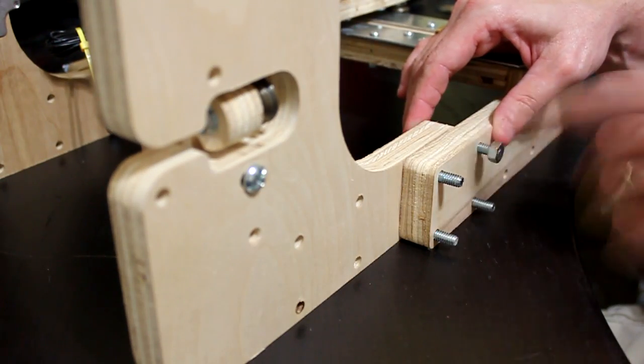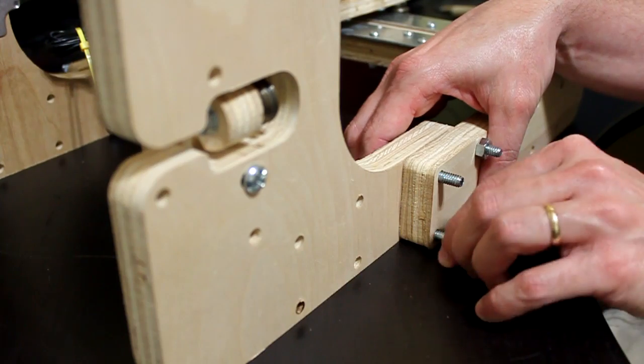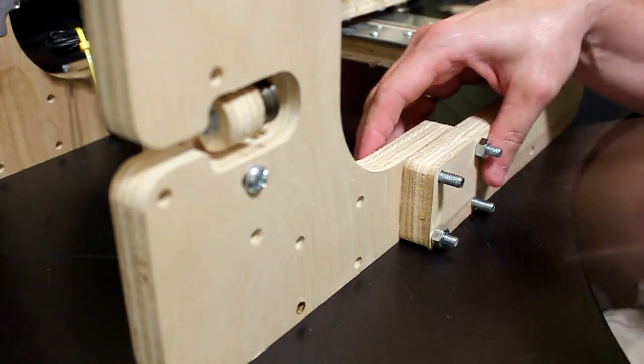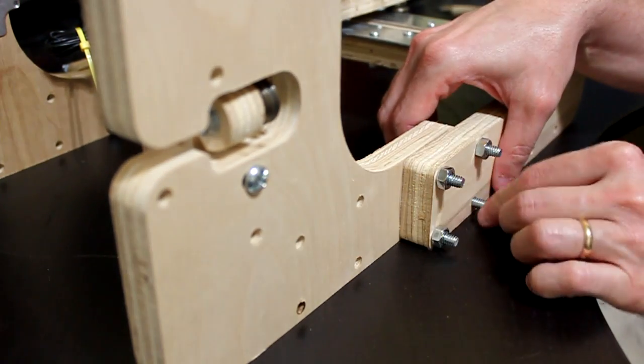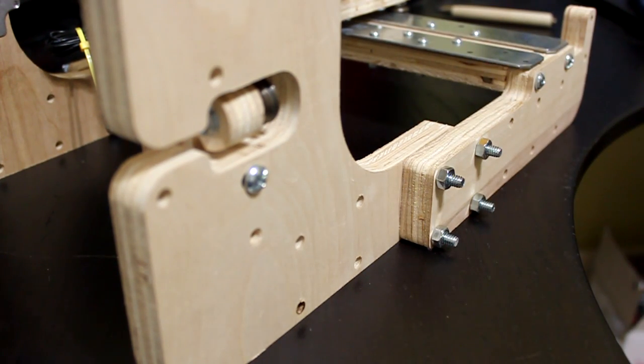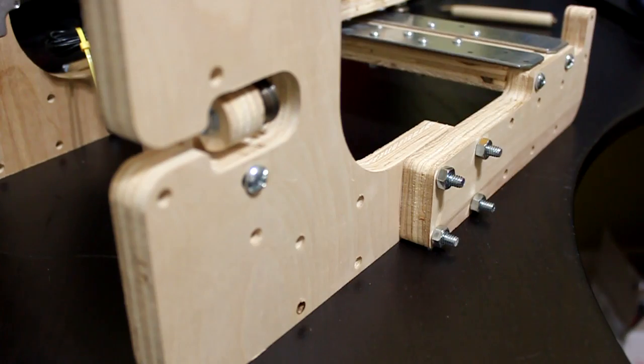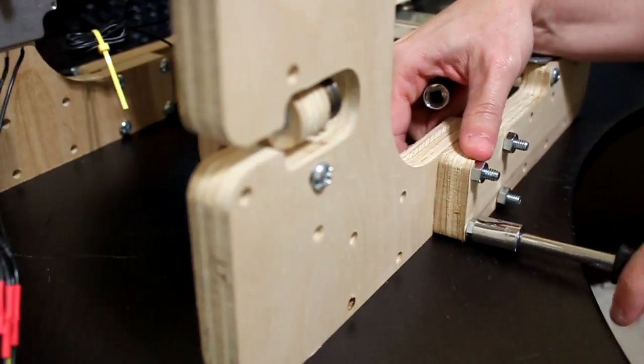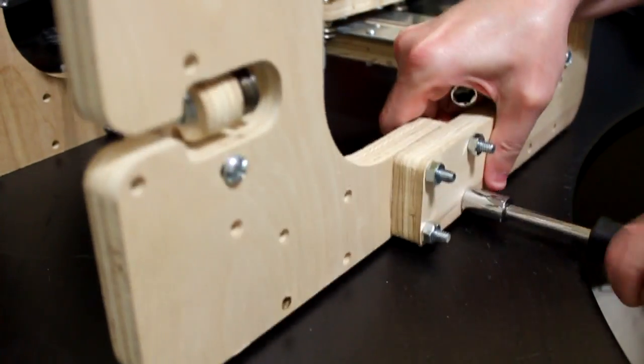It is suggested that you use the other holes for CNC work so it will give it more stability when machining. Four quarter inch by two inch screws and four nuts will be needed for this part of the assembly. Likewise for the other side.